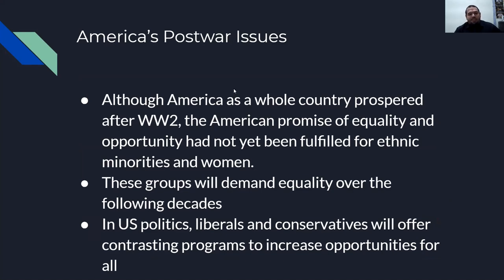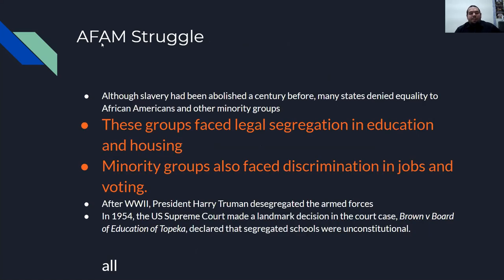America's post-war issues: although America as a whole country prospered after World War II, the American promise of equality and opportunity had not yet been fulfilled for ethnic minorities and women. These groups would demand equality over the following decades in U.S. politics. Liberals and conservatives offered contrasting programs for increased opportunities for all. Although slavery had been abolished a century before, many states still denied equality to African Americans and other minority groups. These groups faced legal segregation in education and housing, and many also faced discrimination in jobs and voting.